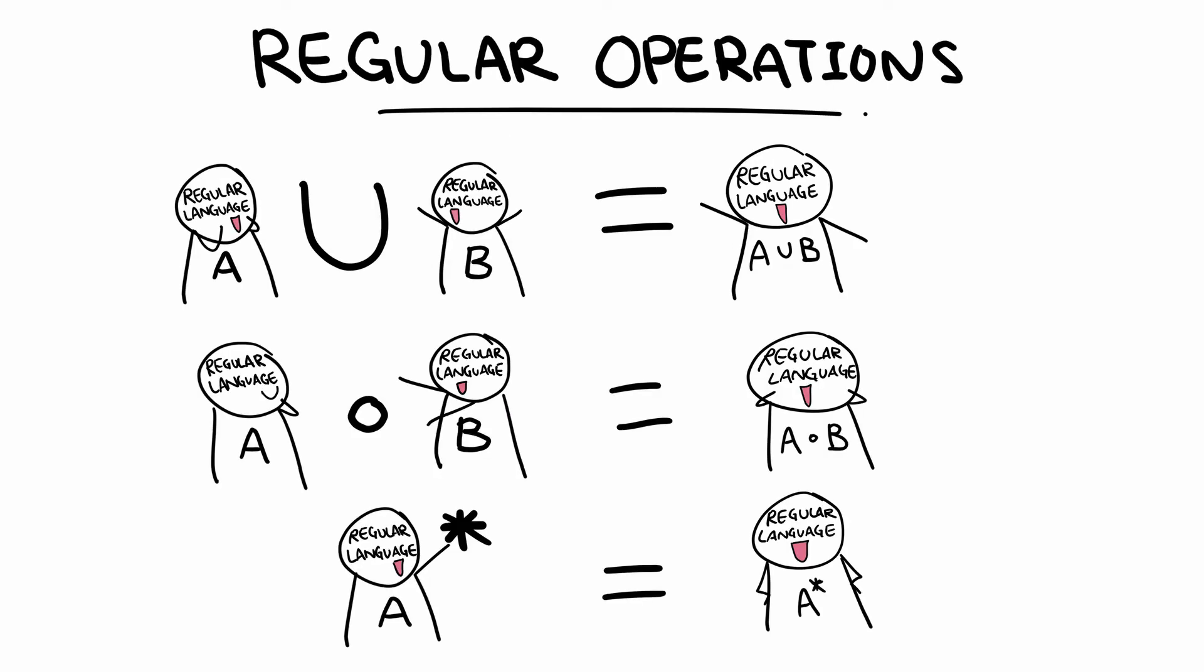And because the concatenation and star operators are also regular operations, that means the class of regular languages is also closed under concatenation and star. And we'll be able to do something similar to what we did earlier with union and construct finite automata for their resulting languages.